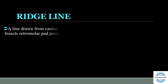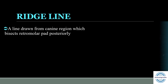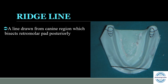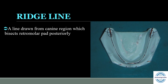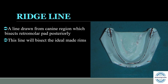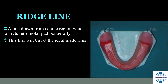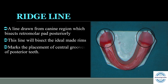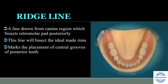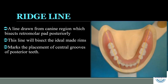Ridge line on the mandibular cast: a line drawn from the canine region that bisects the retromolar pad posteriorly is the ridge line. All reference lines should be extended to the land area so that they are visible when the rims are placed on the cast. The occlusal rims are fabricated according to this ridge line — it bisects the occlusal rim posteriorly. During teeth arrangement, it marks the placement of the central grooves on the ridge.